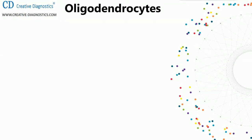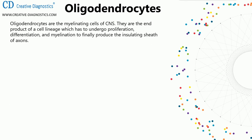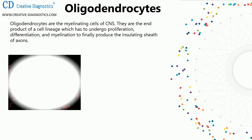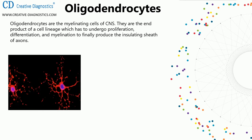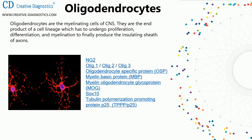Fifth: oligodendrocytes. Oligodendrocytes are the myelinating cells of the CNS. They are the end product of a cell lineage which has to undergo proliferation, differentiation, and myelination to finally produce the insulating sheath of axons. Oligodendrocyte markers include NG2, Olig1, Olig2, Olig3, oligodendrocyte-specific protein, myelin basic protein (MBP), myelin oligodendrocyte glycoprotein (MOG), SOX10, and tubulin polymerization-promoting protein P25.